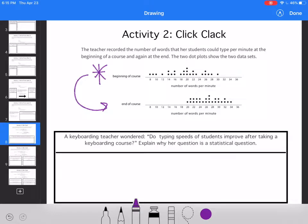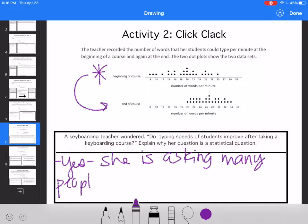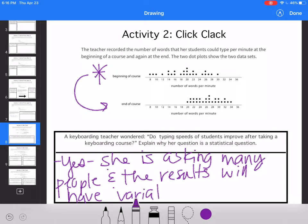A keyboard teacher wondered, do typing speeds of students improve after taking a keyboarding course? Explain why her question is a statistical question. So they're not asking us to validate whether it's right or wrong, they're asking us to decide if it's statistical. Well she's asking, so I would say yes, she is asking many people, and the results will have variability. So it's a statistical question because she's asking many people, and the results will have variability.